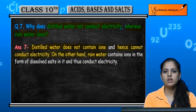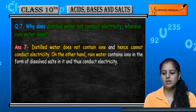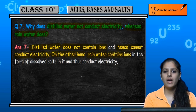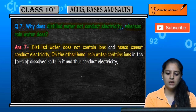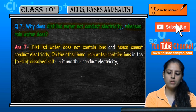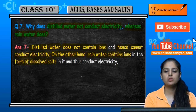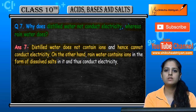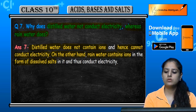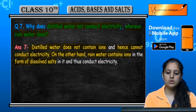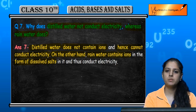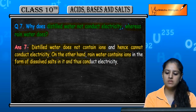But if we talk about rain water, it contains ions in the form of dissolved salts. These dissolved salts produce ions, so ions are present in rain water, which is why it conducts electricity.